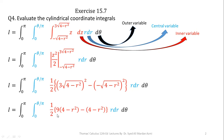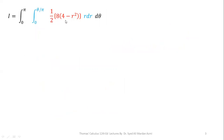Performing the simplification: when we apply the square, 3 squared becomes 9, and the square and square root cancel out. For the lower limit, minus times minus 1 squared is 1, and again square and square root cancel. So we have (1/2) times [9(4 minus R squared) minus (4 minus R squared)]. Subtracting 9 minus 1 gives 8, leaving (1/2) times 8 times (4 minus R squared). This completes the integration and simplification with respect to Z.